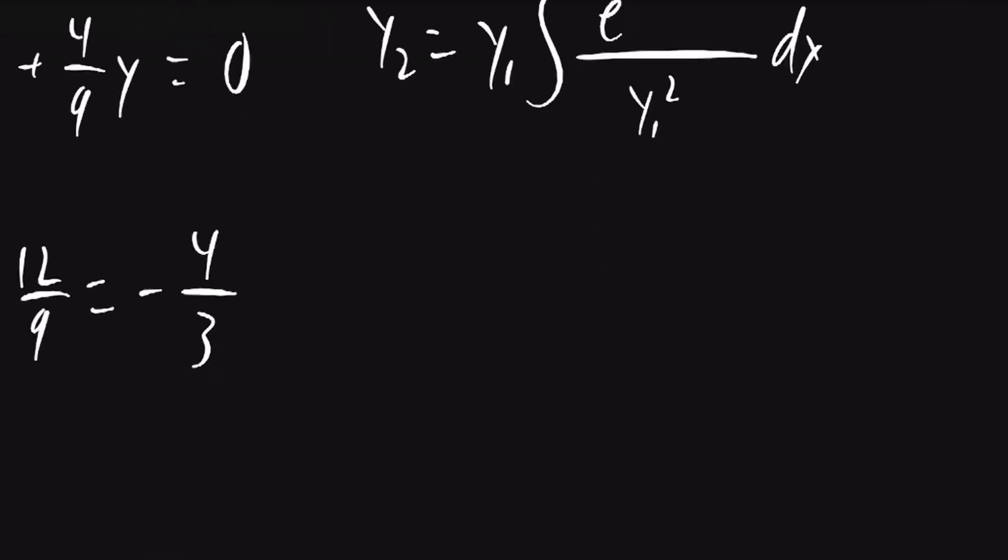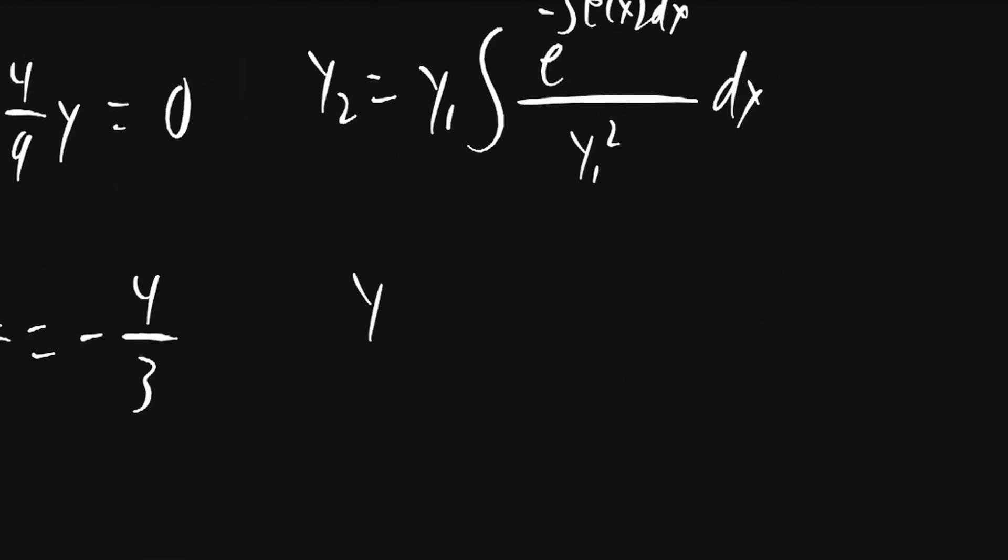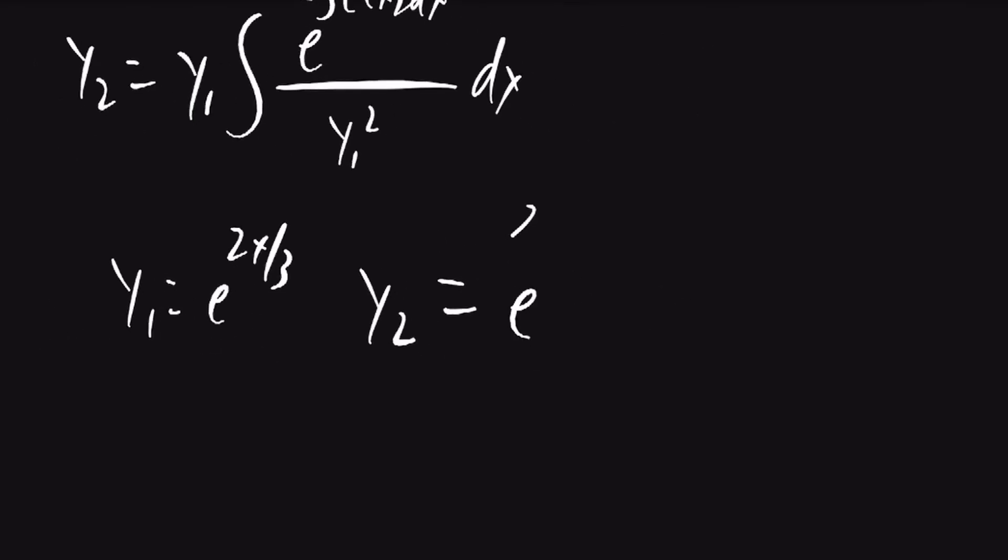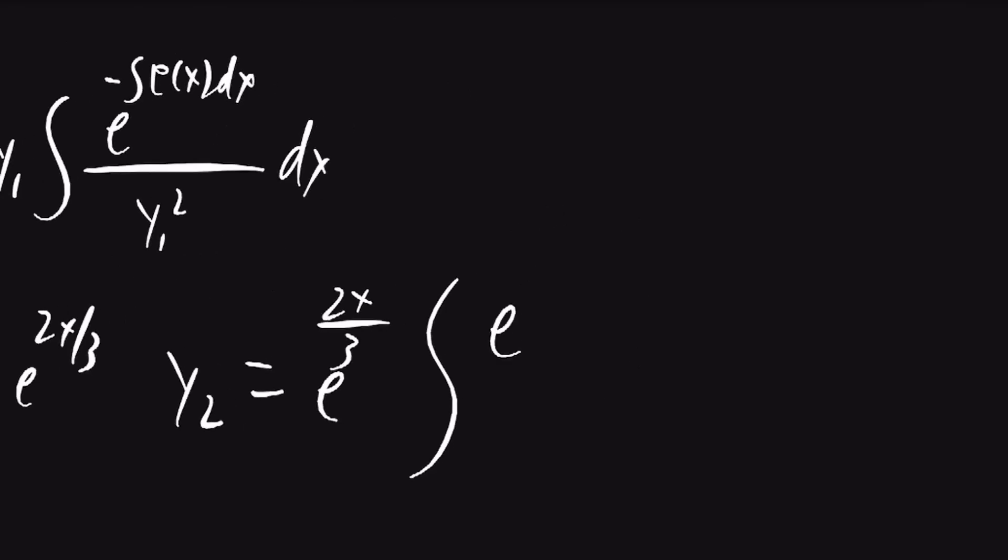y1 is e to the 2x over 3. So I'll substitute that into the equation. y2 equal to e to the 2x over 3 times the integral of e to the negative integral of negative 4 thirds dx. That will be over e to the 2x over 3 squared.